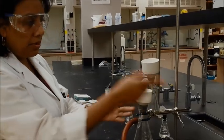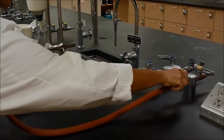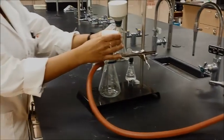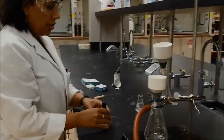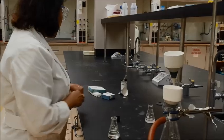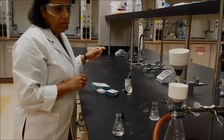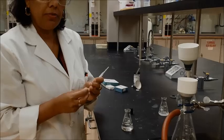Once your Buchner funnel is all set, then what you need to do is turn on the vacuum. And hopefully, you can hear the vacuum. So, things are now getting a little bit set on the vacuum. Then what you need to do is you need to make sure that the filter paper actually sticks onto the Buchner funnel. So, what you will need to do is get a little bit of your solvent that you're using for filtration purposes.